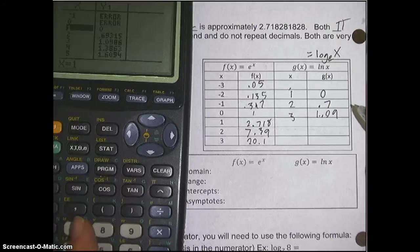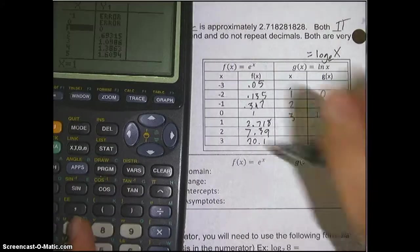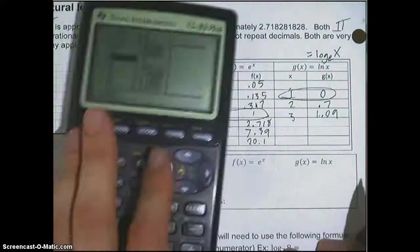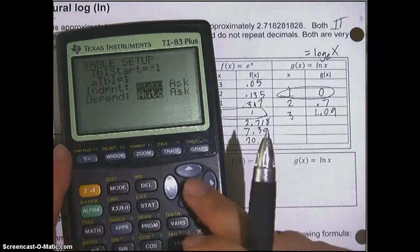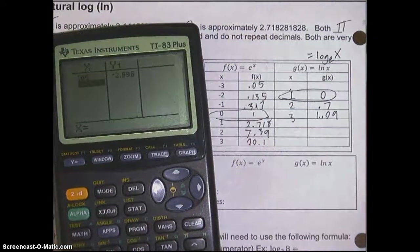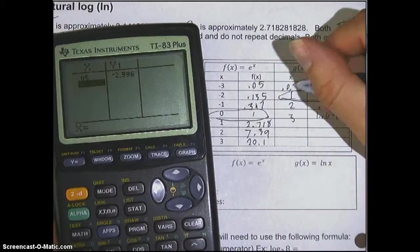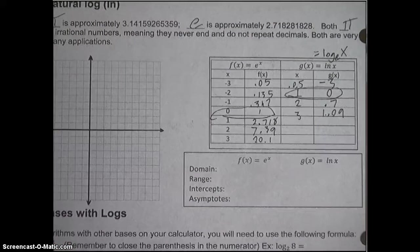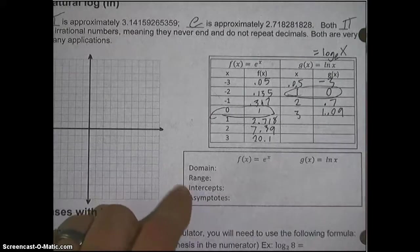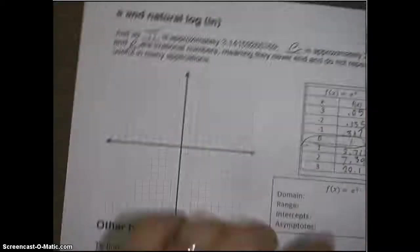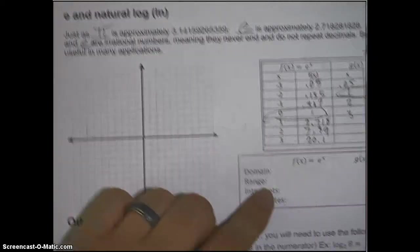But the point of all this is that they're inverses. And you can kind of see that in these two points right here. Like if I went to change this to ask and I typed in 0.05, that's pretty close to negative 3. These guys are inverses. And their domain, their range, their intercepts, their asymptotes... They're exactly the same as what we did for regular logarithms and exponentials. So all this information is the same as what we did up front.